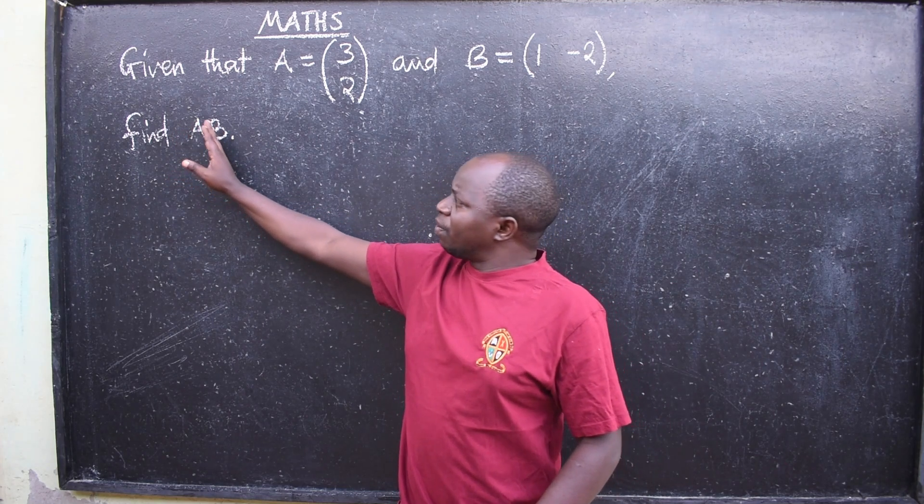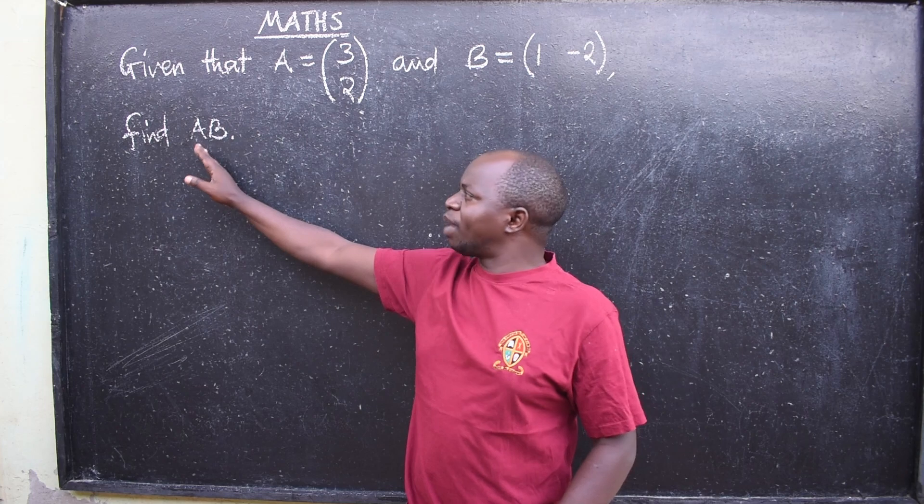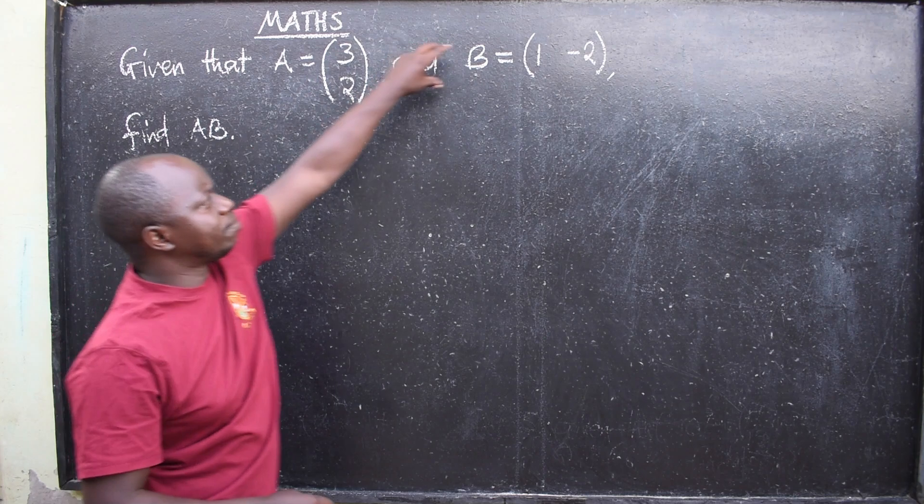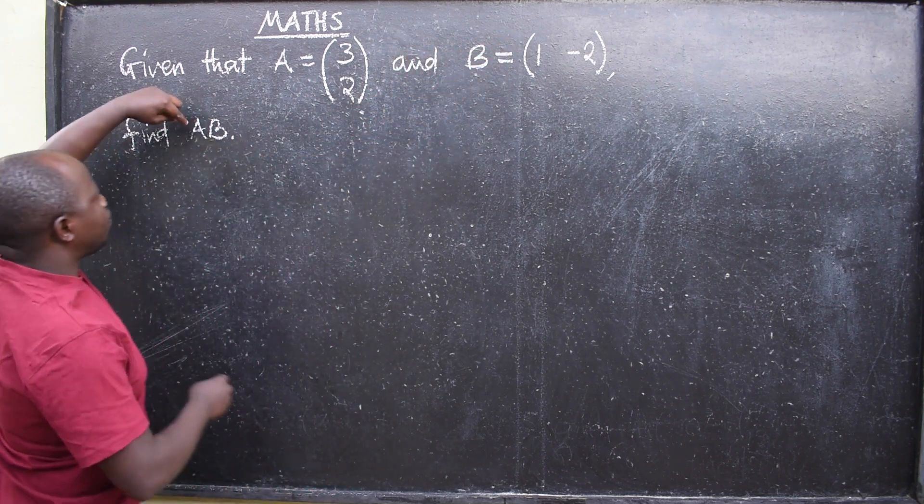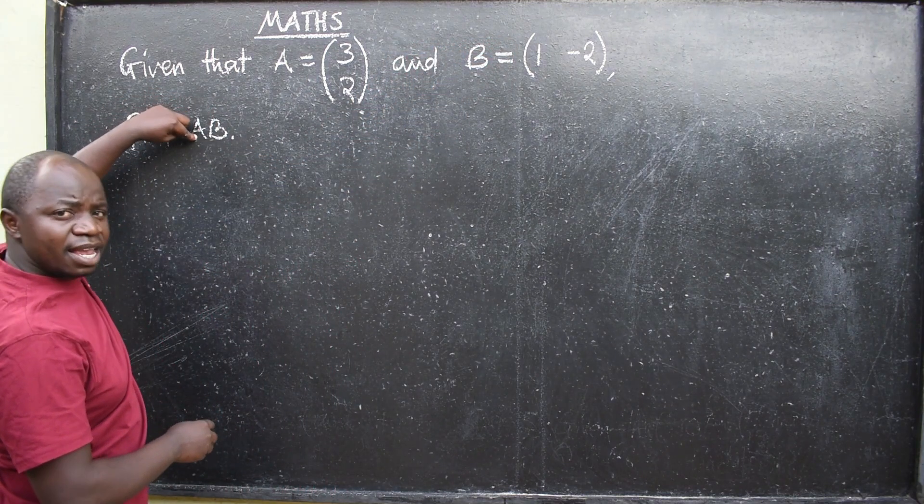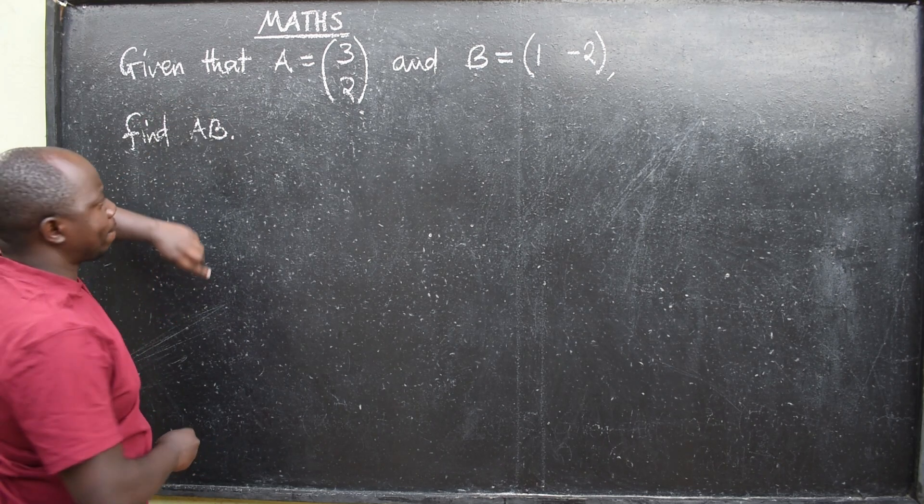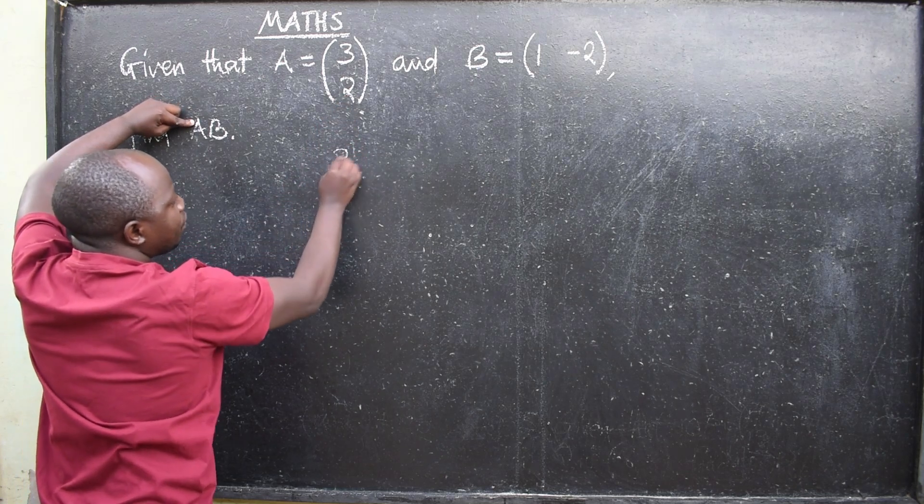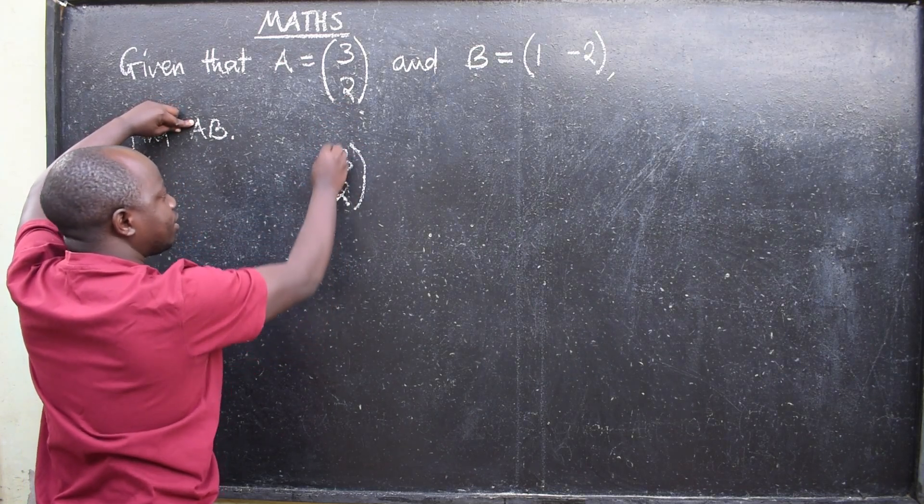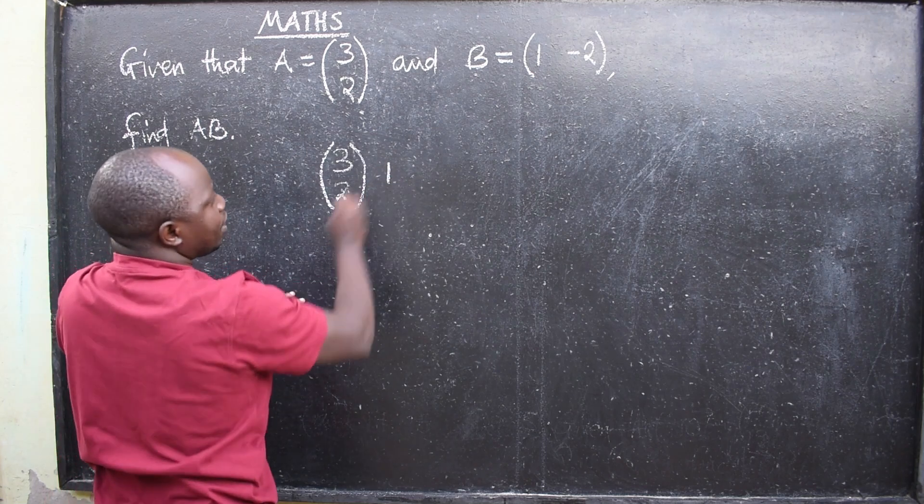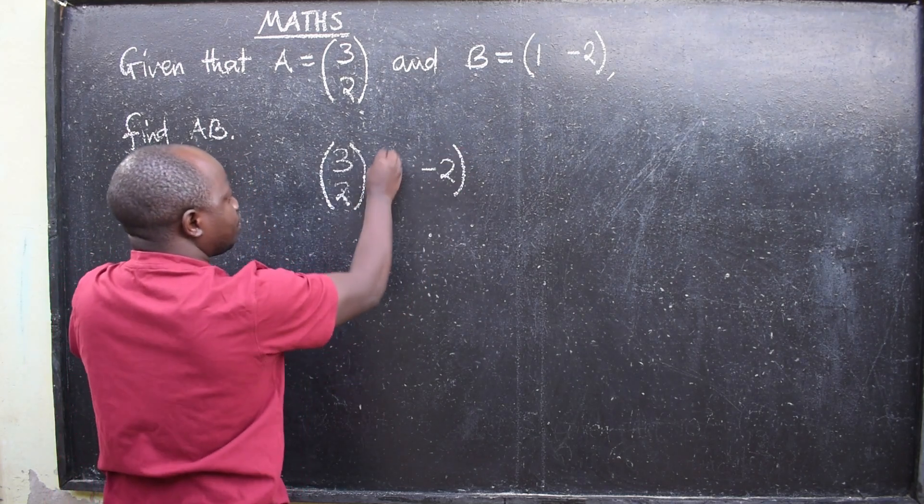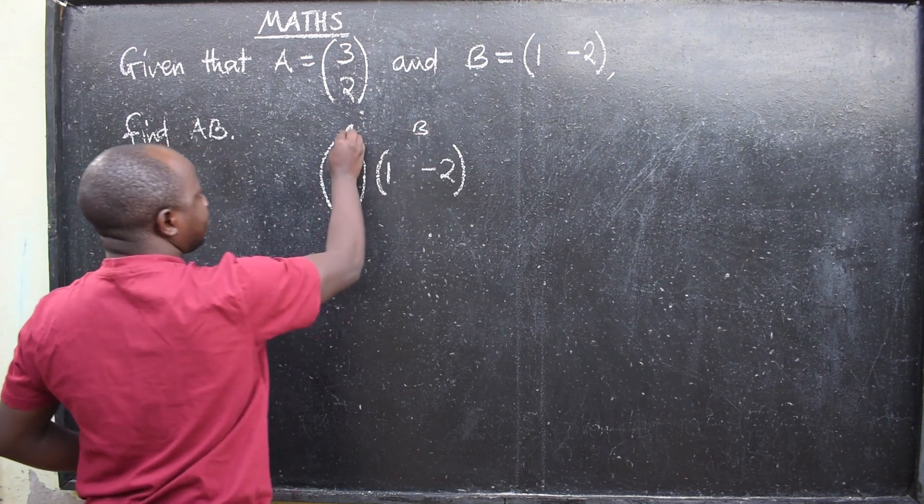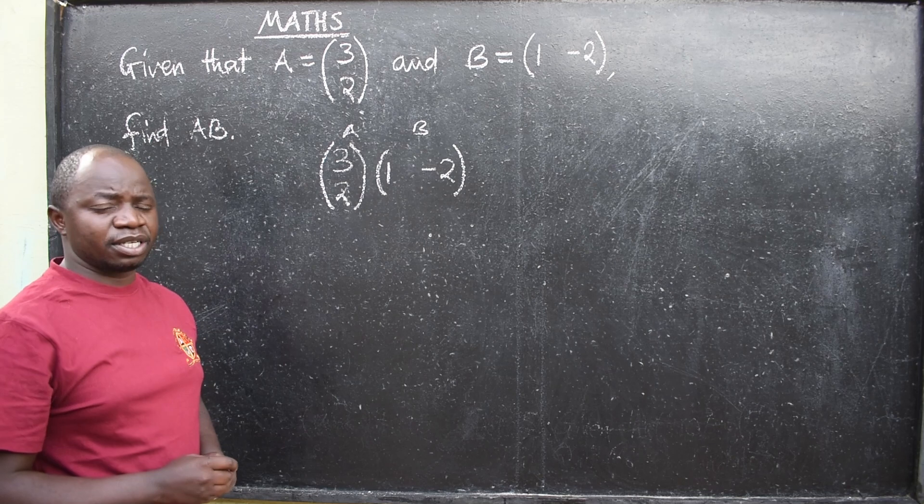AB here means you need to multiply the two matrices. We have matrix A and matrix B. How do we get AB? We are multiplying matrix A and B. Matrix A is (3, 2), that is matrix A. Then matrix B is (1, -2). So you write them exactly the way they are. This is A, this is B.